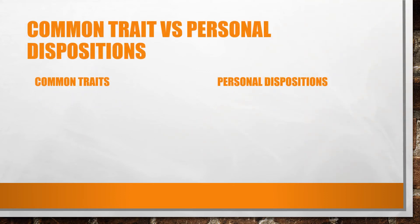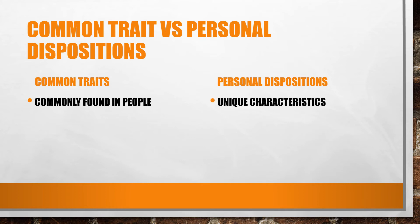Common traits versus personal dispositions. Common traits are categories for classifying groups of people on a particular dimension. For example, some people are more polite than others. Personal dispositions are the unique characteristics of a person that are not shared with others. According to Allport, by focusing on personal dispositions, we can make progress in our understanding of personality.